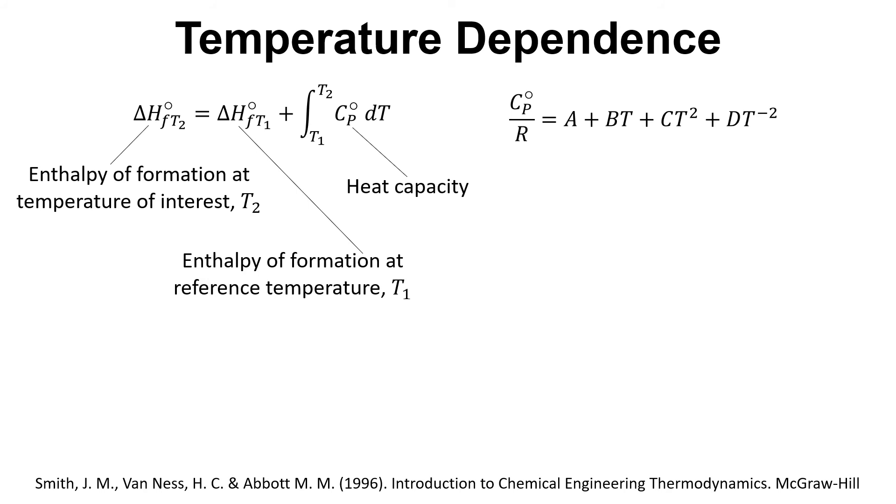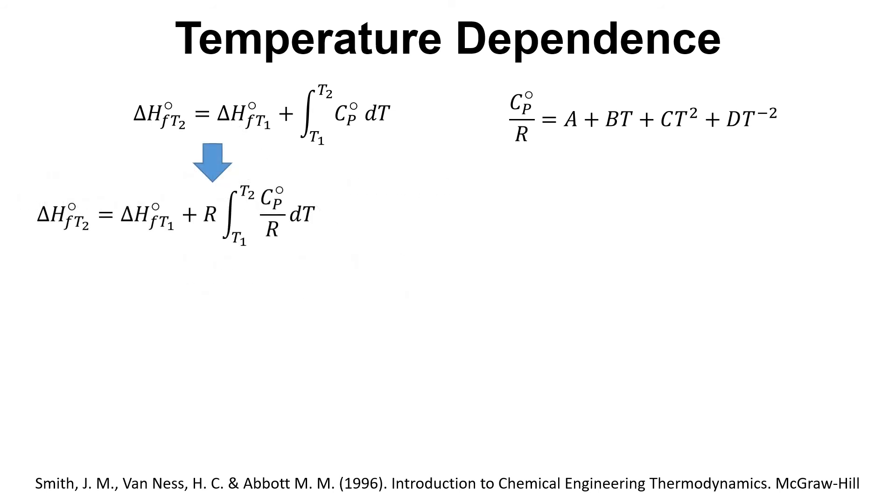The heat capacity is often put in the form Cp divided by R equals A plus BT plus CT squared plus DT to the power of minus two. If we just change the equation slightly, that gives us the temperature dependence. Taking into account the fact that we've got Cp divided by R, we can also put a value of R outside of that integral. They will then cancel down to give us the original formula, but in this form we can then combine that with the equation for the heat capacity.